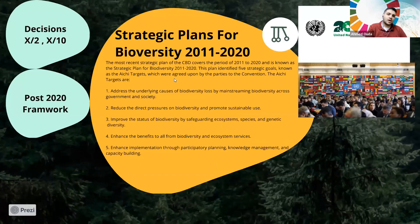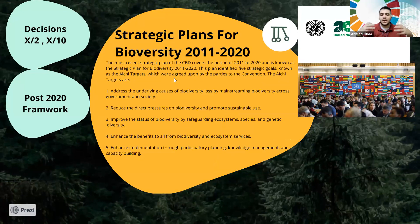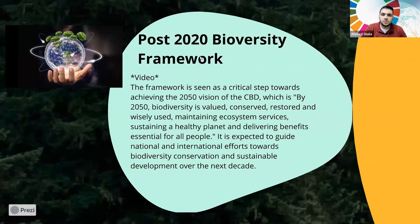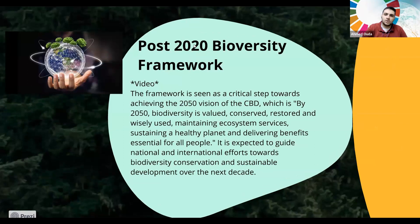Now, since we are in 2023, the convention's strategic plan was supposed to have ended. The question is: did we reach our targets? This discussion is about what happened during the 2011–2020 strategy — did we implement it, did we succeed or not? A short video will be shown before we continue into the Post-2020 Biodiversity Framework.